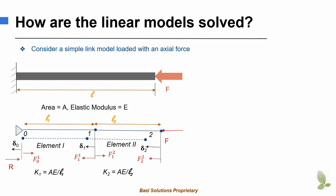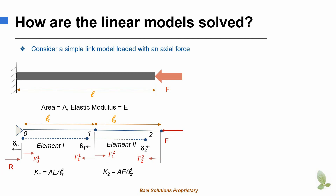Let delta 0, delta 1, and delta 2 be the axial deformations at node 0, node 1, and node 2 respectively. Let F01 and F11 be the internal reaction forces generated in element 1 at node 0 and node 1 respectively. In the notation F01, the 0 indicates the node number while 1 indicates the element number. Similarly, F12 is the internal reaction force in element 2 at node 1, and F22 is the internal reaction force in element 2 at node 2. F is the external axial load applied on node 2, and R is the reaction force generated in the support at node 0.